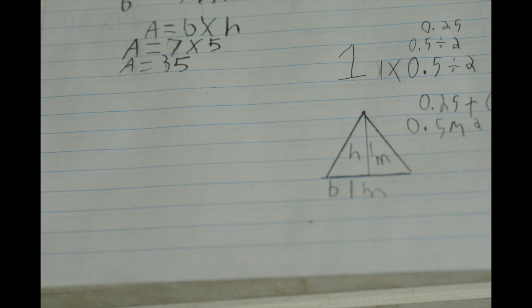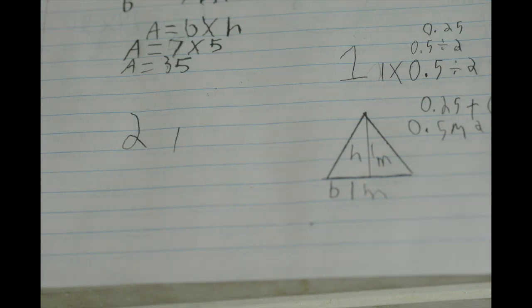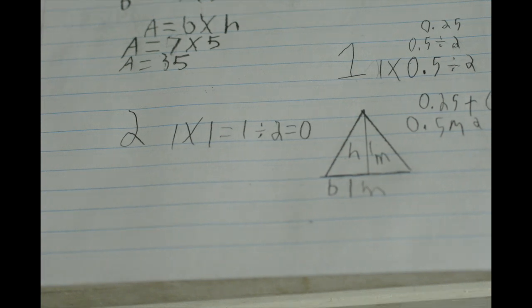The second way you do it is times the base and the height, which is 1 meter for both, which then will equal 1, and divide it by 2, which equals 0.5 meters squared.